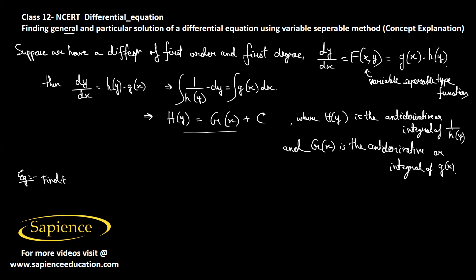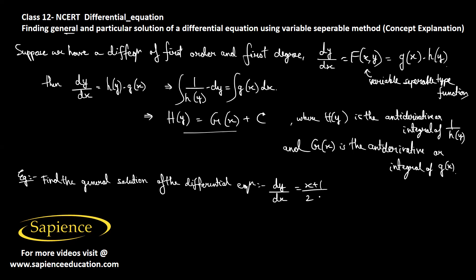For example, it is asked to find the general solution of the differential equation dy/dx equals (x + 1)/(2 − y), where y is not equal to 2. This function is of the variable separable type, so we can write it as (2 − y) dy equals (x + 1) dx.